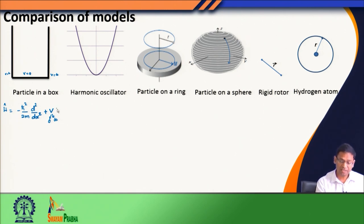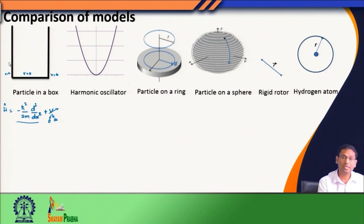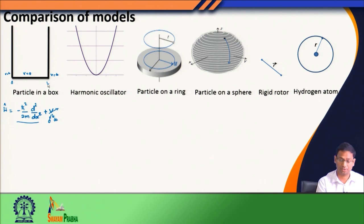In the particle in a box problem, our potential energy was constant — either zero or infinite — across all x values, from 0 to L for a box of length L. This represented a hard potential because we saw a sudden rise from zero to infinite at the boundaries.